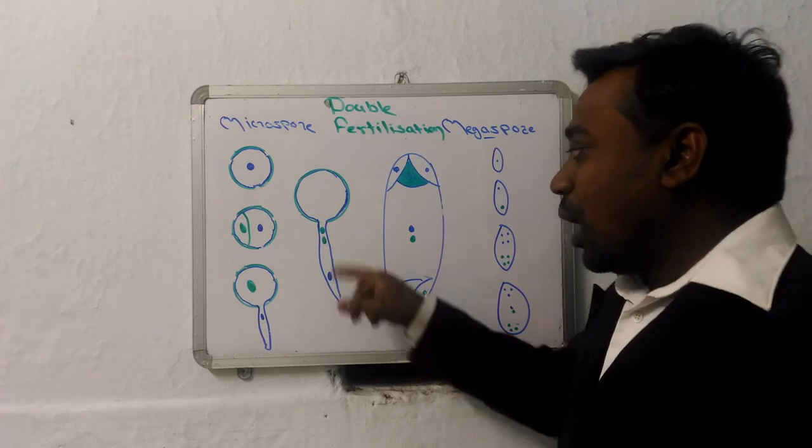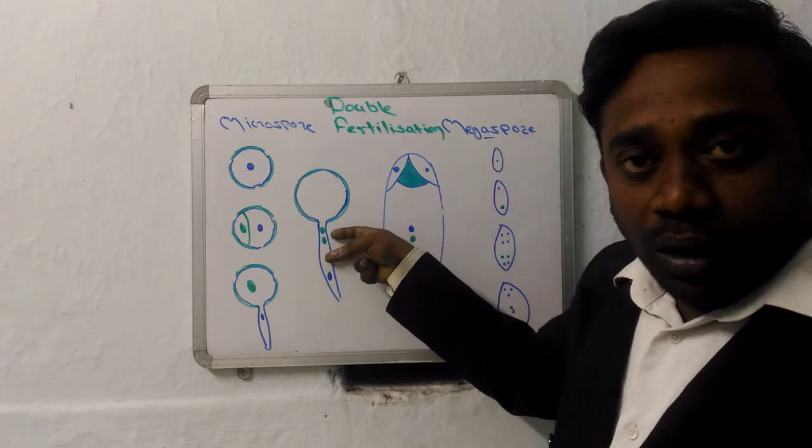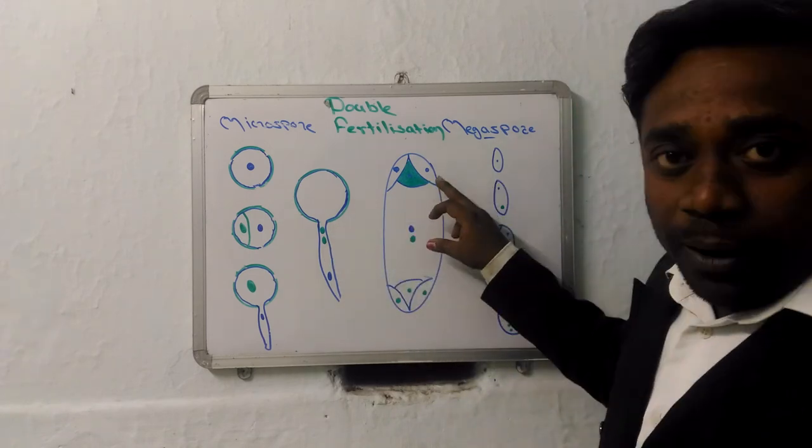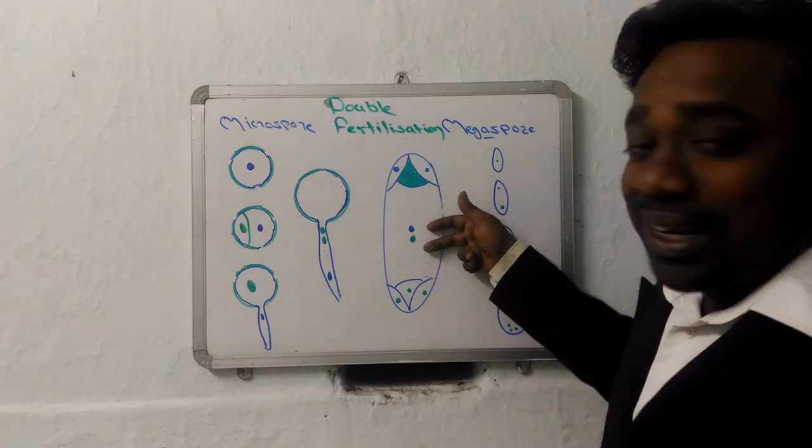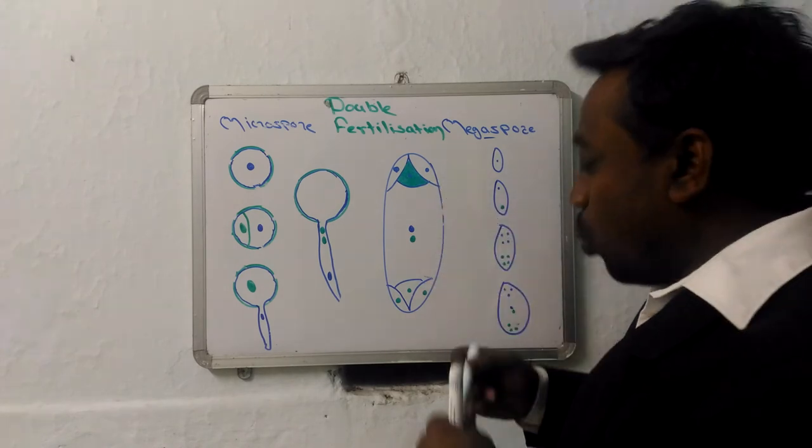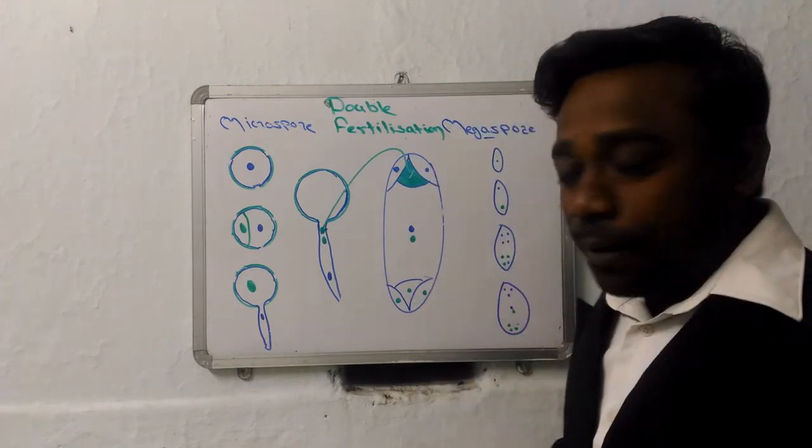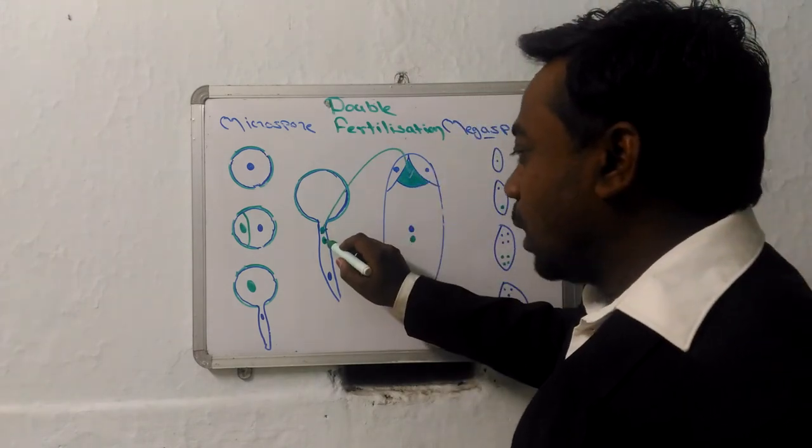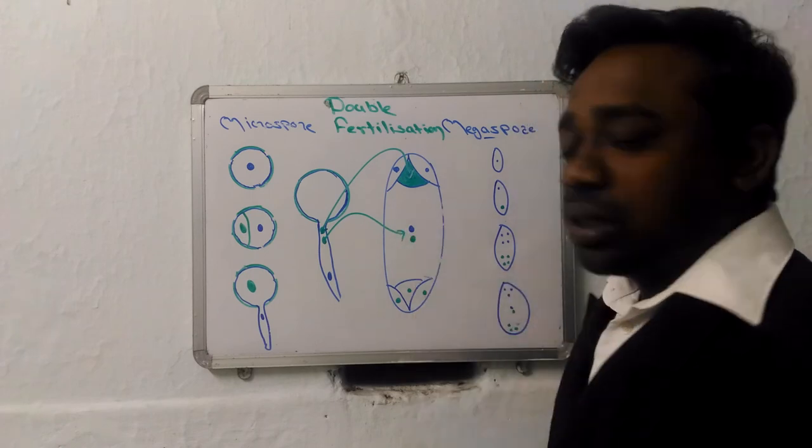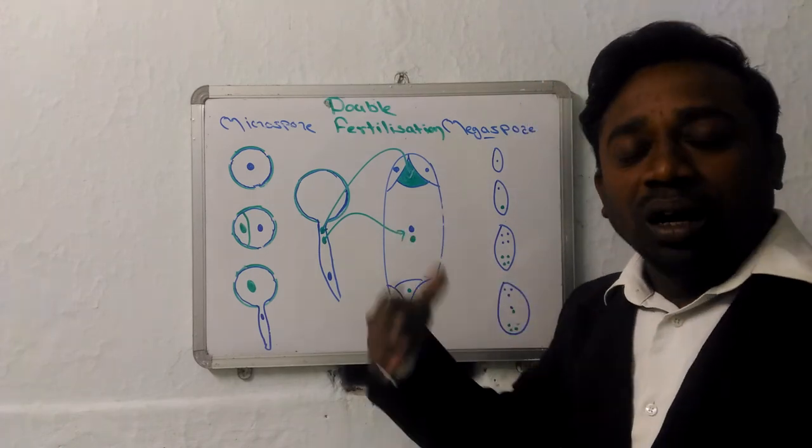Now what happens in fertilization? We have two male nuclei. We have one fertile egg in megaspore. We have secondary nucleus in megaspore. So one of the nucleus from male gamete fuses with egg and other nucleus from male gamete fuses with secondary nucleus, which was already diploid.